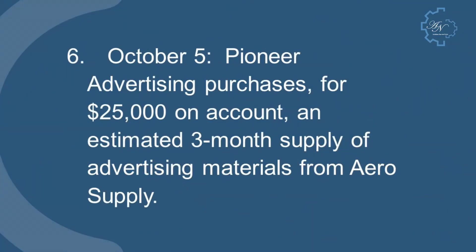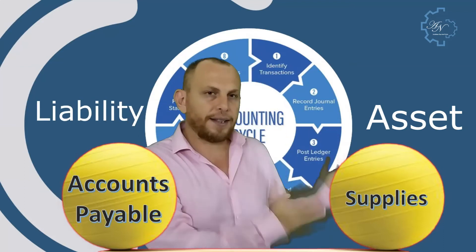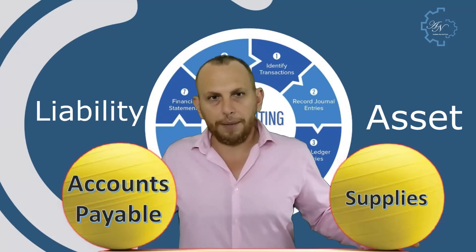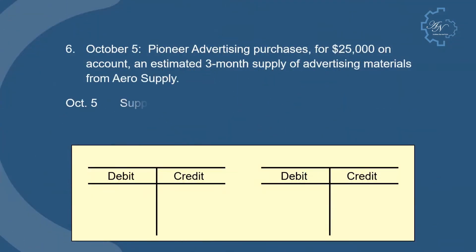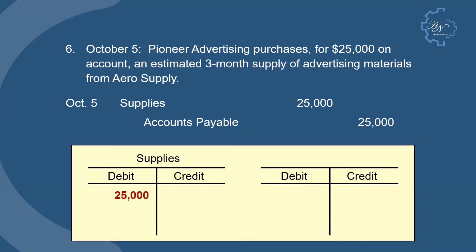October 5: Pioneer Advertising purchases $25,000 on account of an estimated three-month supply of advertising materials from Aero Supply. Supplies is an asset, accounts payable is a liability. Supplies increase, accounts payable increases. The entry is: debit supplies, credit accounts payable. And this is the posting.